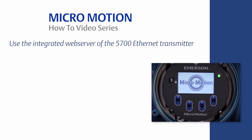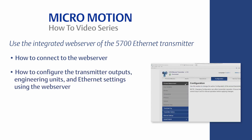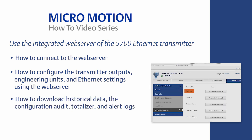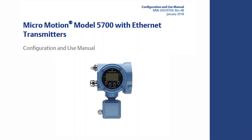In summary, you should now know how to connect to the web server; how to configure the transmitter outputs, engineering units, and Ethernet settings using the web server; how to download historical data, the configuration audit, totalizer, and alert logs; and how to run and schedule Smart Meter Verification using the web server. For the complete set of configuration instructions, please refer to the MicroMotion Transmitter Configuration and Use Manual, which can be found on www.emerson.com.